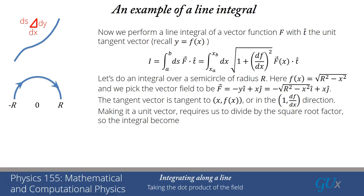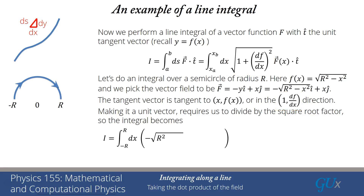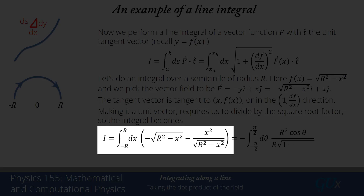That isn't a unit vector. I have to normalize it by dividing by the square root of 1 plus (df/dx)². Now look — that is exactly the extra factor in the integral. So the square root of 1 plus (df/dx)² cancels in the numerator and denominator, and I can replace that product by (1, df/dx), then just take the dot product. Taking that dot product, I get minus y times 1 — that's minus the square root of r² minus x² — plus x times df/dx. Recall df/dx was minus x over the square root of r² minus x², multiplied by x, giving this form for the integrand.